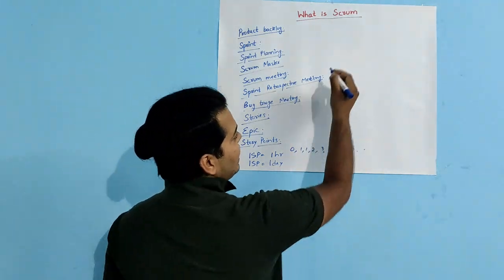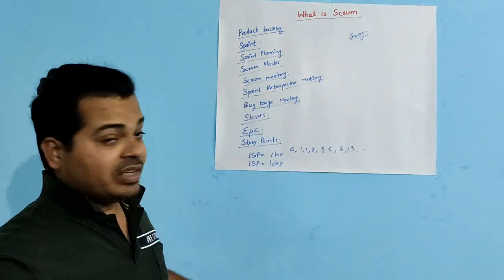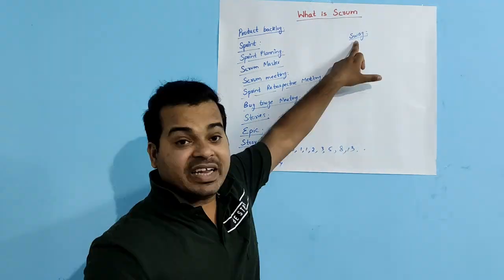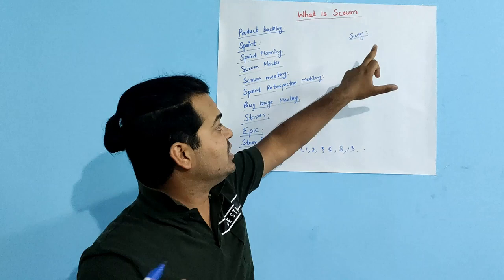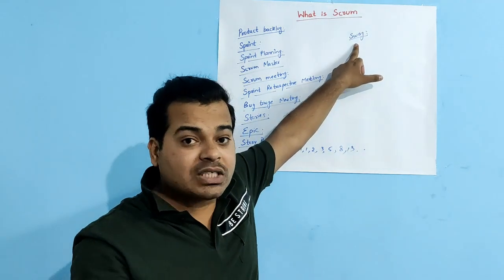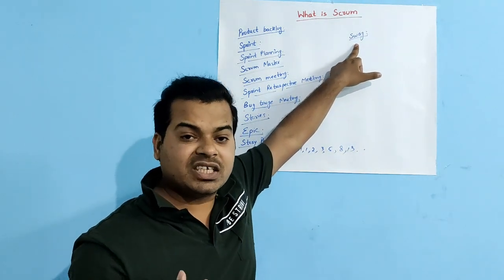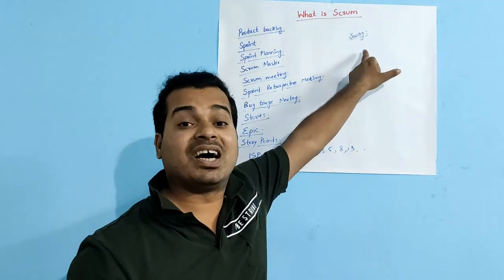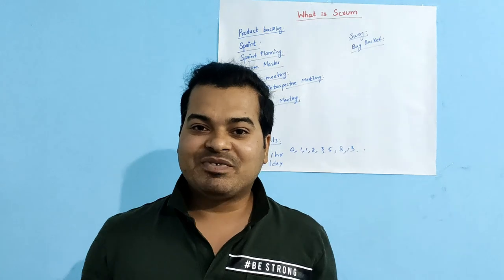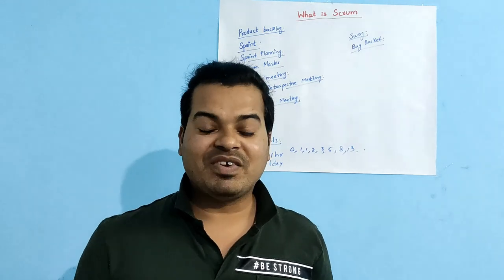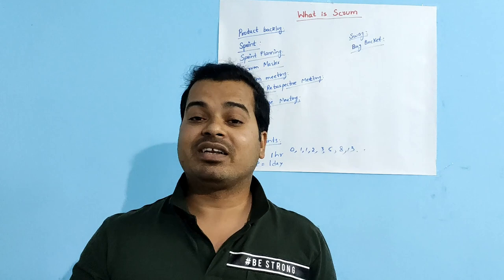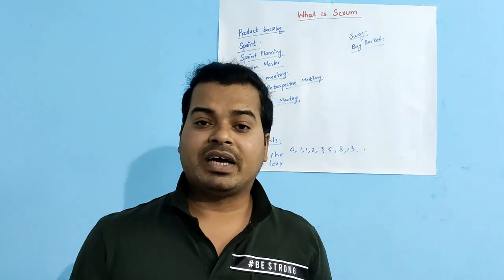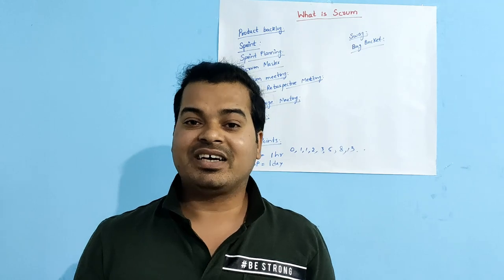The final concept is Swag. Swag is similar to Story Points, but expressed in hours. It is a rough approximation given by developers and testers to complete a particular task, stated in hours. I hope this video was useful. If so, please give it a thumbs up. Post any questions in the comments, and you can also reach me via the Gmail ID in the description. Thank you for watching.